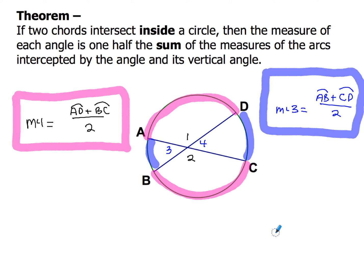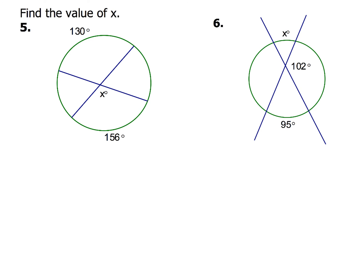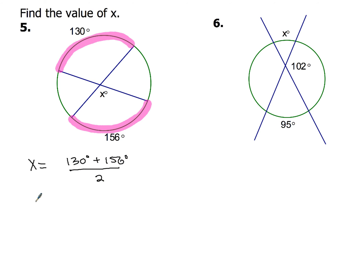Find the value of x. Get out that highlighter — highlight this arc right here and then this arc right here. X is the angle formed. So: x equals 130 degrees plus 156 degrees, all divided by two. Adding those up gives 286 divided by two, and when you divide by two you get 143 degrees. Don't forget the degree symbol.